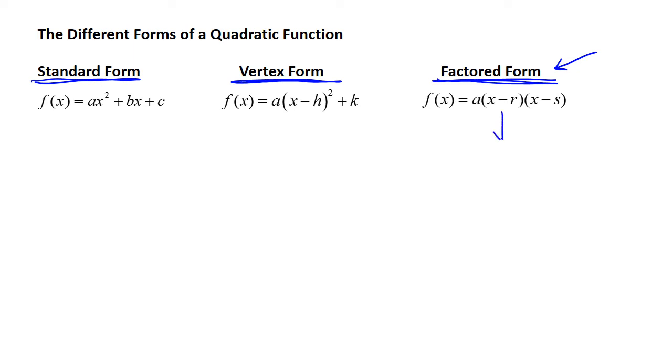then what you get are factors that give you the x-intercepts. So x minus r, if you were to set it equal to zero, would give you r as an x-intercept. So you'd have (r, 0) as an x-intercept, and (s, 0) as another x-intercept.